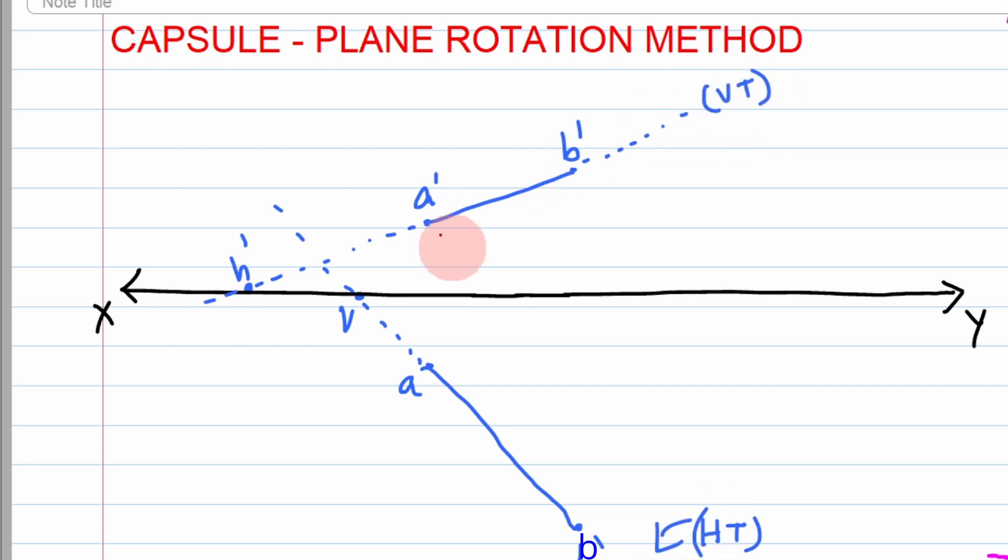In order to find the exact location of VT, just draw a perpendicular from v to this line. This point is now VT, the vertical trace. To find the exact location of HT, draw a perpendicular from h dash to this line. This is now your HT. So the points a dash, b dash, h dash, and VT lie in one single line, and a, b, v, and HT lie in one single line.